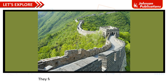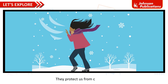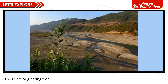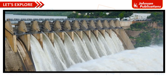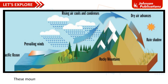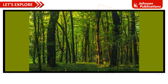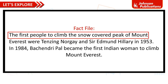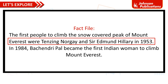The Himalayas are important because they form a natural wall along the northern borders and protect us from cold winds. The rivers originating from the Himalayas carry fertile soil to the plains and help generate hydroelectricity. These mountains also stop the rain-bearing monsoon winds from going further north, and their forests provide valuable wood and herbs.